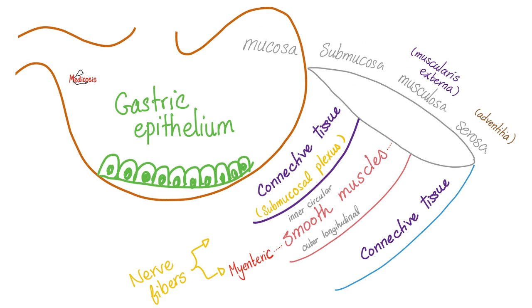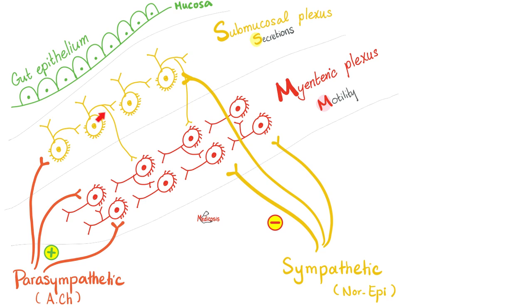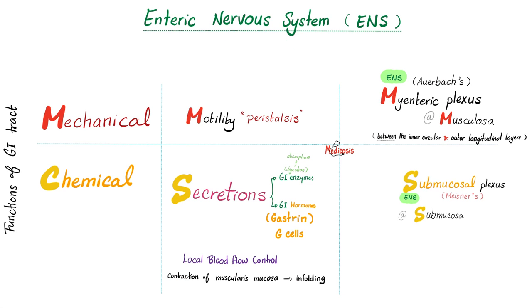The wall of your gut has mucosa, submucosa, and muscularis externa. Where do we find the submucosal plexus? In the submucosa — for secretions. Where do we find the myenteric plexus? In the muscularis externa, for motility. The myenteric plexus is located exactly between the inner circular muscle layer and the outer longitudinal muscle layer, both of which are inside the muscularis externa. The submucosal plexus handles secretions and the myenteric plexus handles motility.